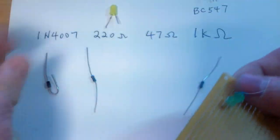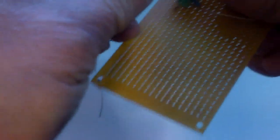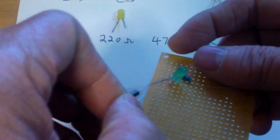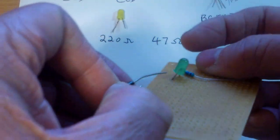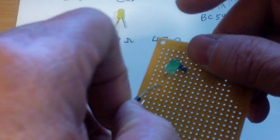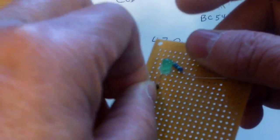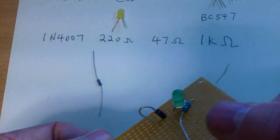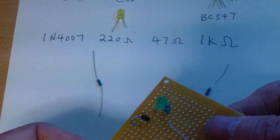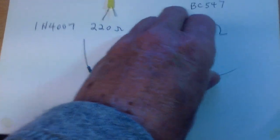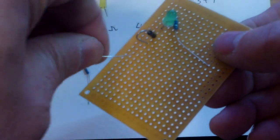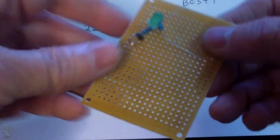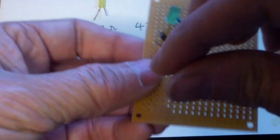And then you have your diode with the band facing away from the LED. So that's your diode. And then you have your 1K resistor. And then the other end goes to the negative rail.